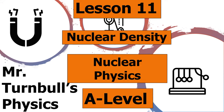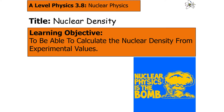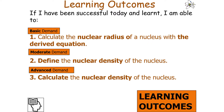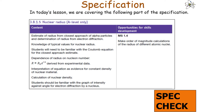Hello and welcome to this lesson on nuclear density, which is part of the nuclear physics topic in AQA A-level physics. In today's lesson we're going to look at how to calculate the nuclear density from experimental values. We should be able to calculate the nuclear radius with a derived equation, define the nuclear density of the nucleus, and calculate it, linking to AQA specification point 3.8.1.5, the nuclear radius.